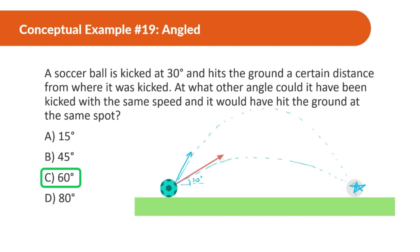We know this because 45 degrees is the angle where from the ground it goes the furthest. Symmetrically, 30 degrees is 15 degrees below 45, and 60 degrees is 15 degrees above 45. An easier way to think about it is: whatever adds up to 90 will land at the same spot. So 30 plus 60 equals 90. Similarly, 10 plus 80 equals 90 — those will also land at the same spot. Whatever adds up to 90 will land at the same spot if hit from level ground.